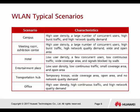Here are some example scenarios and their characteristics. For the campus scenario, there is high user density, a large number of concurrent users, high bus traffic, and high network quality demand. Campus basically has a lot of users and you would like to have high network quality.